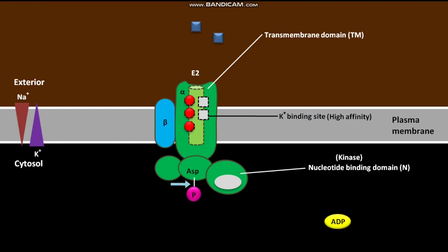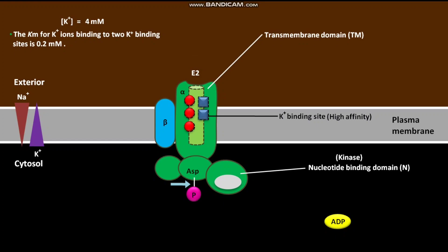The extracellular K+ concentration is 4 mM, and the Km for K+ binding to the two sites is 0.2 mM. Since the Km is lower than the extracellular K+ concentration, two extracellular K+ ions bind to the two high-affinity K+ binding sites. During the E1-to-E2 transition, the three bound Na+ ions become accessible to the exoplasmic face, and the affinity of the Na+ binding sites decreases, so Na+ ions are transported outward despite the high extracellular Na+ concentration.